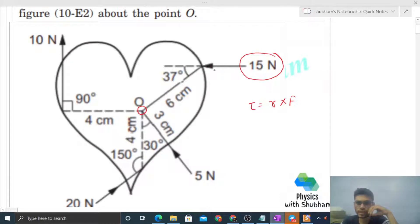The point where the 15 Newton force acts, let's say this point is 1. This force is F1 and its position vector from point O is r1. Now simply torque 1 will be equal to r1 cross F1.